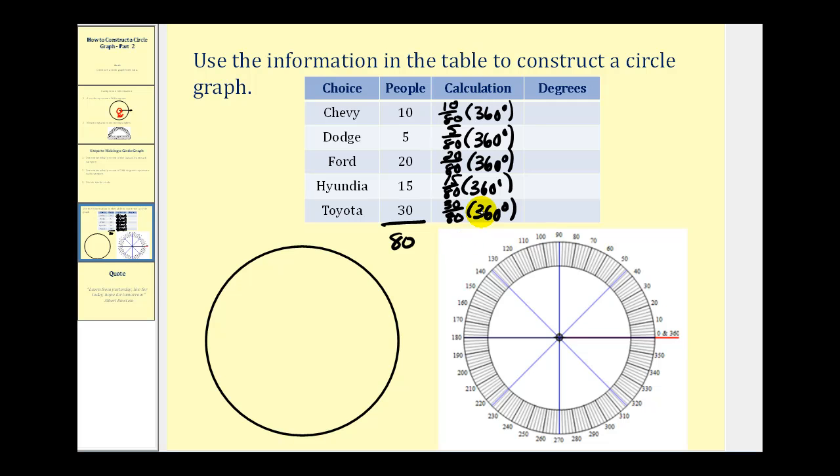Again, we could simplify these fractions, but there's really no need if we're going to use the calculator. So now these products will tell us how many degrees of the circle each category should represent.